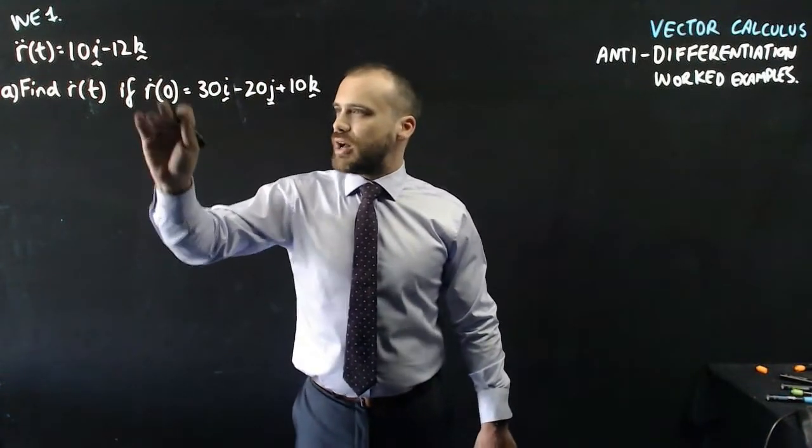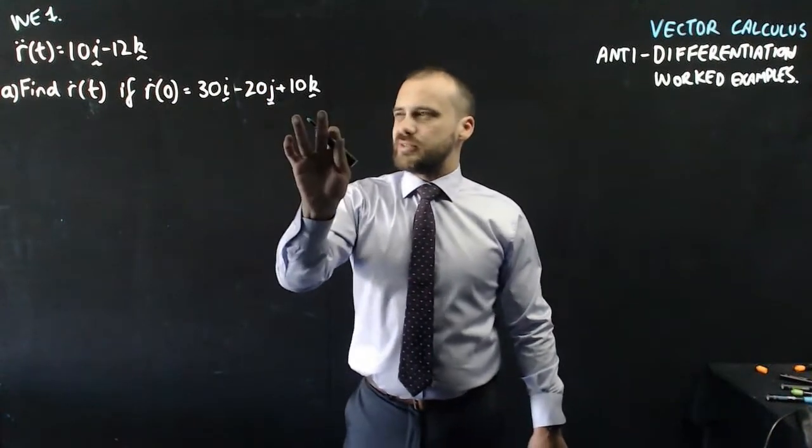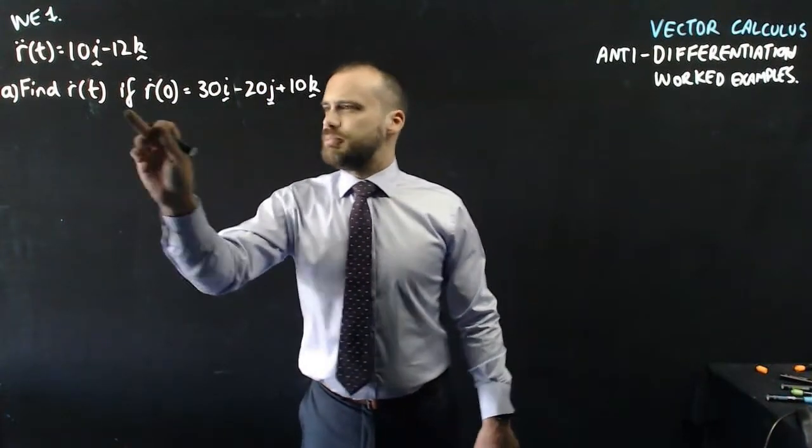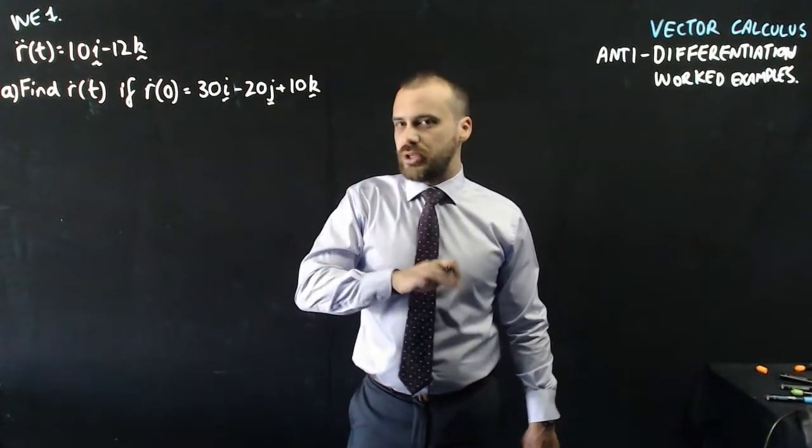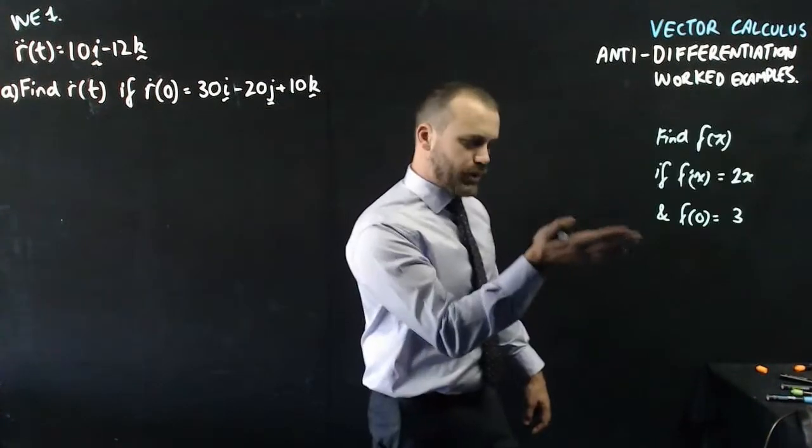Back up again. If R dot zero equals this. Why do I need this bit here? Well it's because of that plus c that you've been doing in your other anti-differentiation. A question that looks like this.